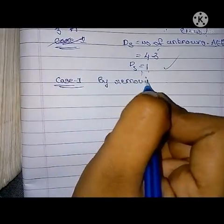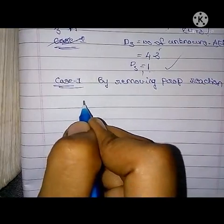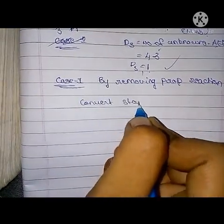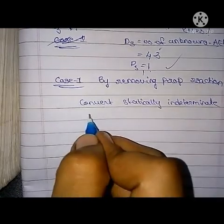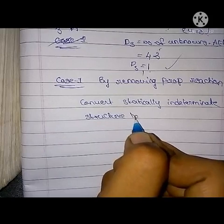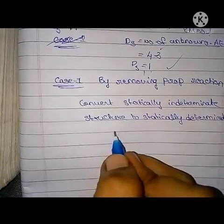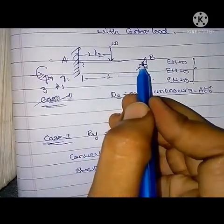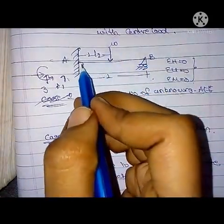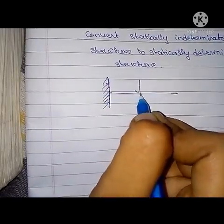By removing the proper reaction, we convert the statically indeterminate structure to a statically determinate structure. With three equations and three unknowns, three minus three equals zero. In Case 1, we apply the center load W at midspan. This is the Case 1 load diagram with points B and A, span L.